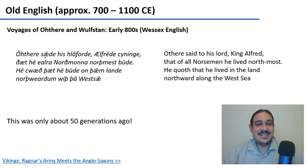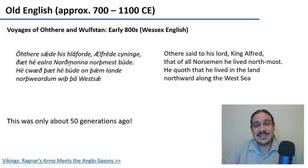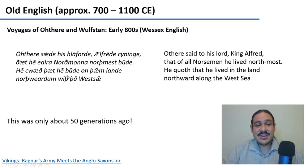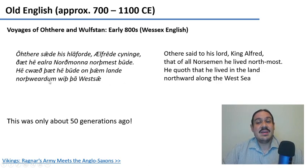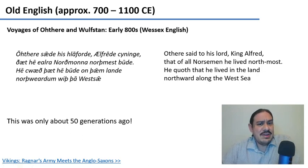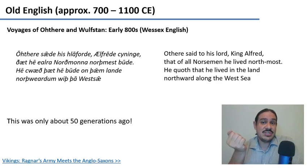Probably 'sæde' looks a little bit like 'sad.' 'Northmest' looks like 'northmost.' 'Norþmona' looks like 'Norsemen.' 'Lande' kind of looks like 'land.' 'Westse' with a little bit of imagination can be 'west sea.' This letter here is called thorn, and it's pronounced like our 'th.' So you can see that it could be 'with,' like 'along.' But as you can see, there are similarities, but it is a very different language. The separation between us and this language is about fifty generations, about a thousand years.